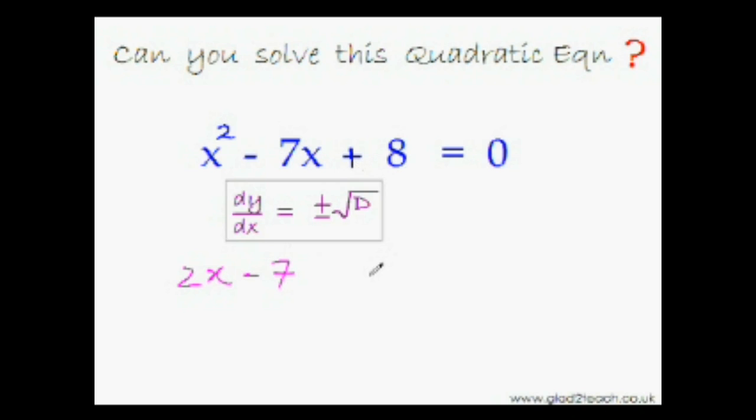And obviously the first derivative of a constant term is always 0. But putting plus 0 here makes no difference, so we will not put it. So this was the first derivative. So now put this equal to plus minus root D. D if you remember for this equation we had calculated to be 17. So we will put equal to plus minus root 17.